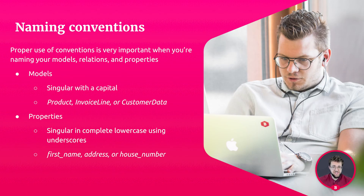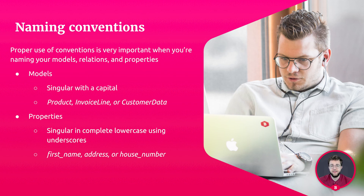The proper use of conventions is also very important when you're naming your models, relations, and properties. Keep in mind that this is very important because other developers in your application might run into your data model, and they need to understand and write their stuff down the exact same way you do to prevent confusion. For models, we write down the names in singular with the first letter capitalized. For example, Product with a capital P. Invoice Line — the words Invoice and Line both capitalized, but together. And the same goes for CustomerData — C and D are both capitalized.